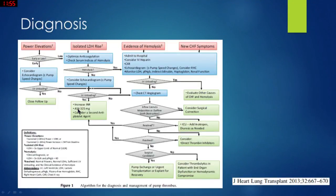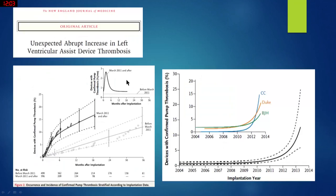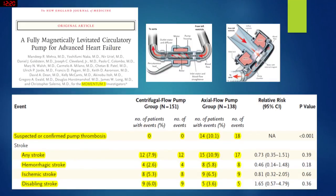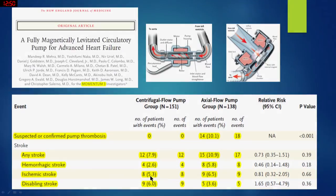There are several algorithms for diagnosing pump thrombosis and hemolysis. The Cleveland group reported an abrupt increase in pump thrombosis with HeartMate 2 a few years ago. Looking at the Momentum 3 trial comparing HeartMate 2 and HeartMate 3, the newer-generation centrifugal pump showed no pump thrombosis, while HeartMate 2 showed a 10% rate of pump thrombosis at one year. However, the rate of embolization such as stroke was also notable.